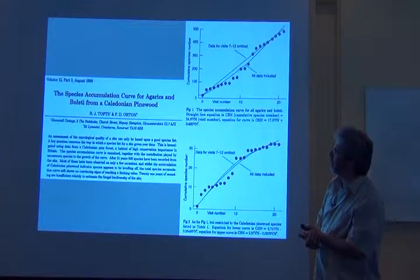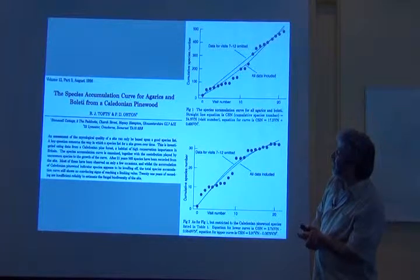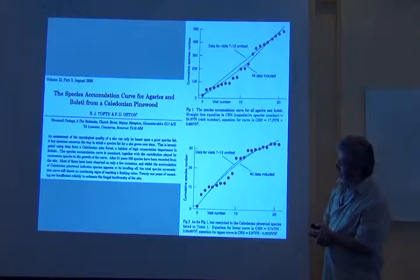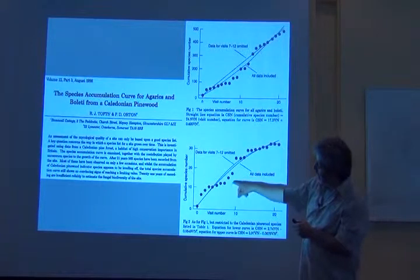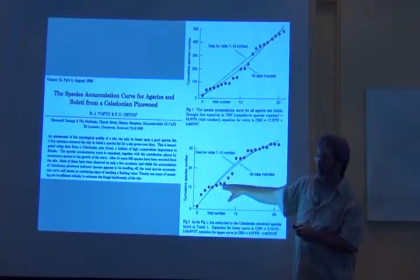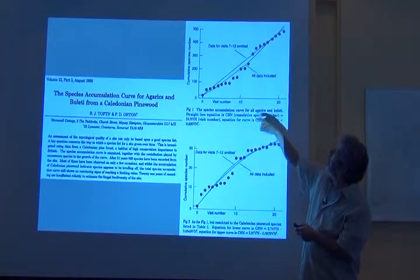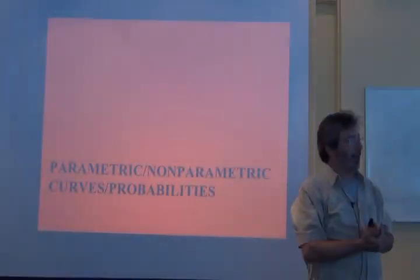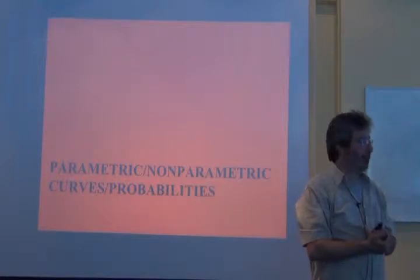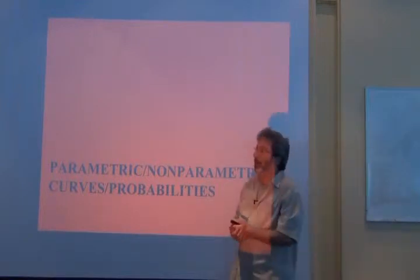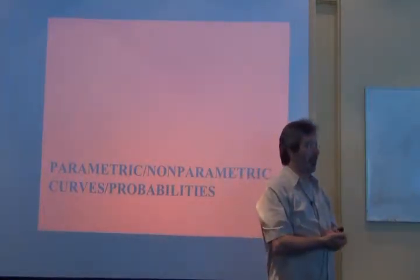Species accumulation curve for Agarix and Boleti from a Caledonian pine wood. These data made me a little scared. Nice flattening off here, a big step. That inventory is far from done. Now let's think about how we go beyond just eyeballing it. Let's think about how do we start getting some numbers and confidence limits.